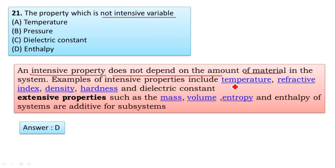These are all intensive properties — they do not depend on the amount of material. For example, you heat the solution to 60 degrees in a beaker; any part of that solution has the temperature of 60 degrees. Hence it does not depend on the amount of material. Here they are asking which is NOT an intensive variable, i.e., the extensive property.